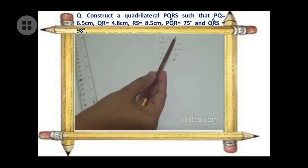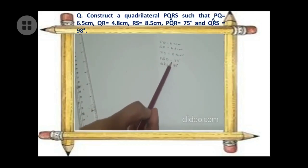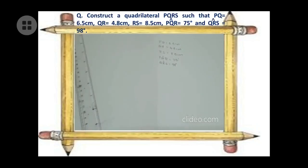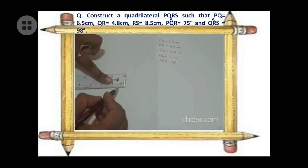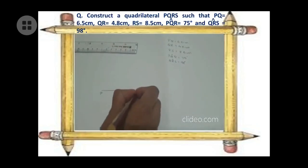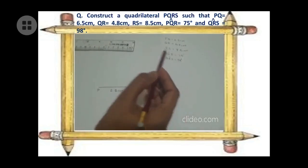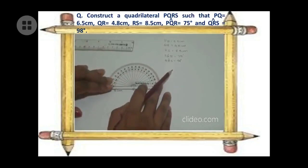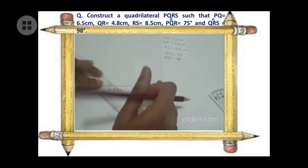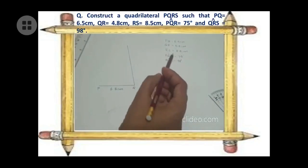Given: PQ = 6.5, QR = 4.8, RS = 8.5, angle Q = 75 degrees, angle R = 98 degrees. First, draw the baseline PQ of 6.5 cm using your ruler and name it PQ. Then, using your protractor kept at Q, mark the angle of 75 degrees and draw a line at that angle.